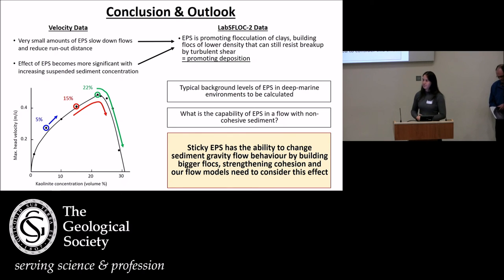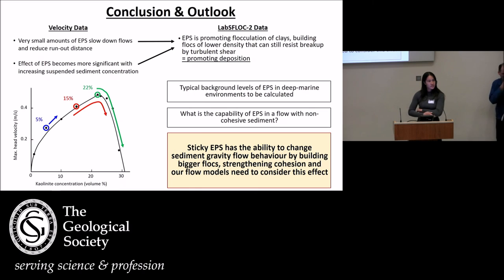A final comment pointed out the relevance of EPS to terrestrial ecosystems where plant cover is present, noting it will be very relevant in agriculture. The commenter added they have no idea what the EPS distribution was before plants came on the scene, but that's a question for future effort. Melissa was thanked and the session concluded.